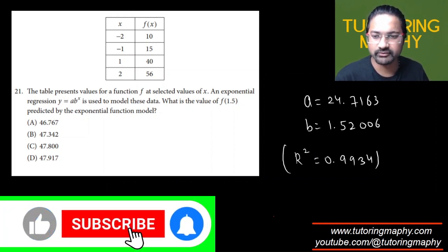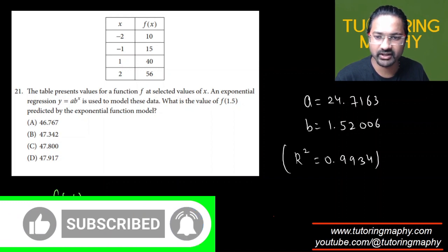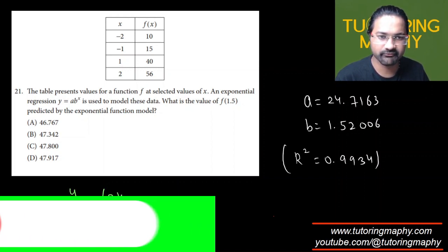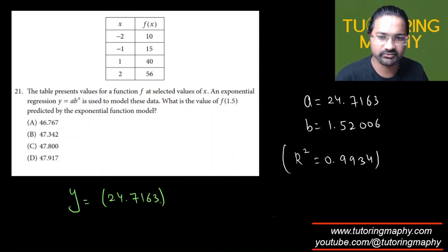So the function we have is y equals 24.7163 times 1.52006 raised to x. Since we need the value of f(1.5), all we need to do is replace x with 1.5.